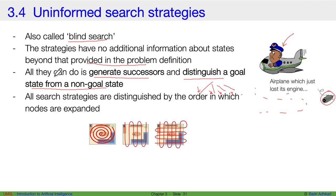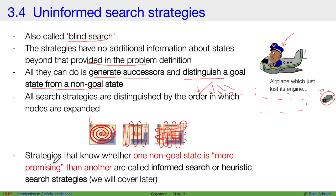All search strategies are distinguished by the order in which nodes are expanded. Uninformed search strategies may explore states in different patterns — spiral, row-by-row, or grid-based — applying different techniques to explore all possible states and check whether they are goal states or not. Strategies that know whether one non-goal state is more promising than another are called informed or heuristic search strategies, which we will cover later.